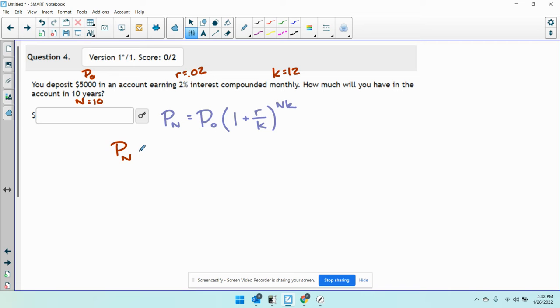I have P sub N equals 5,000 times 1 plus 0.02 over 12 to the 10 times 12 power.